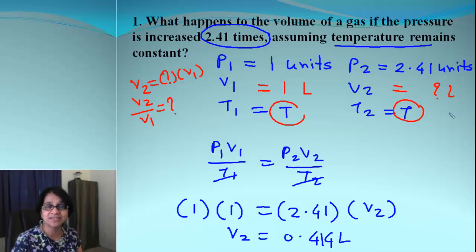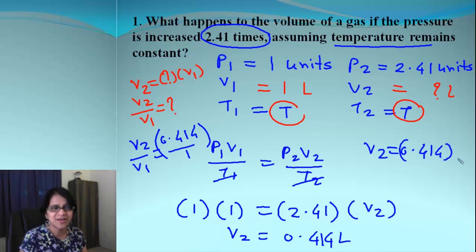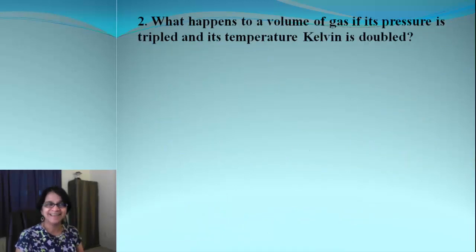So we can say we got the answer in liters. Or if I want to find out this ratio, that tells me the ratio will be 0.414 divided by 1. Or I can say that volume V2 is 0.414 times V1. So we can practically answer this question in whichever format we would like.